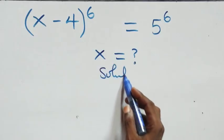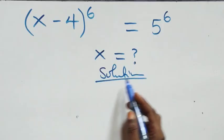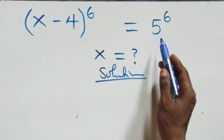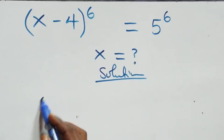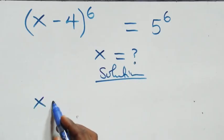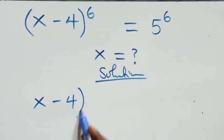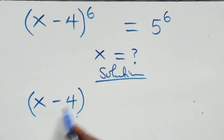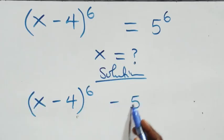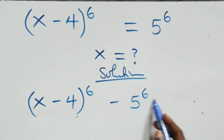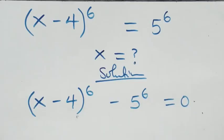Solution from here. What we have here: you can take 5 raised to the power 6 to the left-hand side. And what we have here comes: (x minus 4) raised to the power 6, minus 5 raised to the power 6, equals to 0.